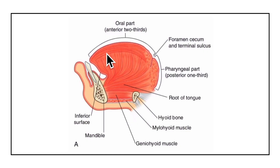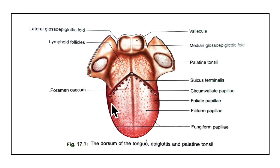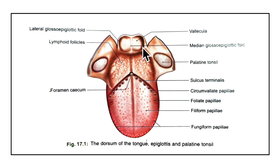The tip of the tongue forms the anterior free end which lies behind the upper incisor teeth. Moving on to the dorsum of the tongue, it is convex in all directions and is divided into an oral part or anterior two-thirds and a pharyngeal part or posterior one-third by a V-shaped groove called the sulcus terminalis. The two limbs of the V meet at a median pit called the foramen cecum. Apart from the oral and pharyngeal parts, there is also a small posterior-most part.